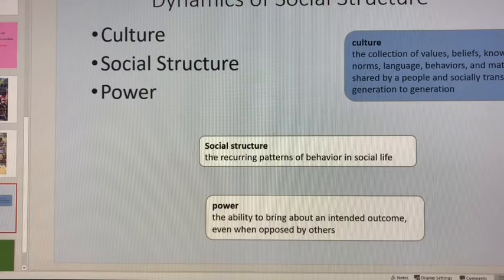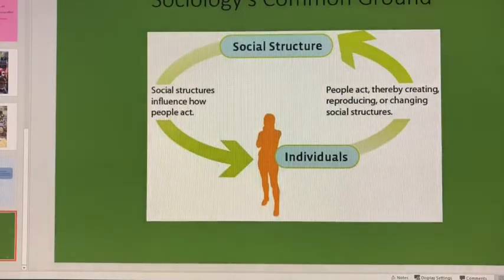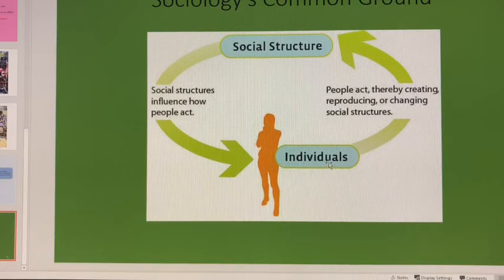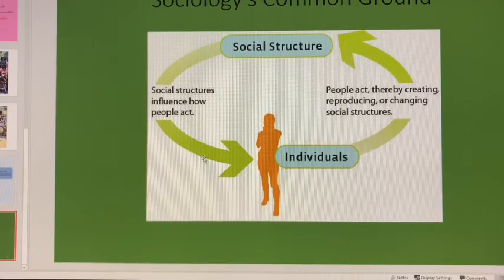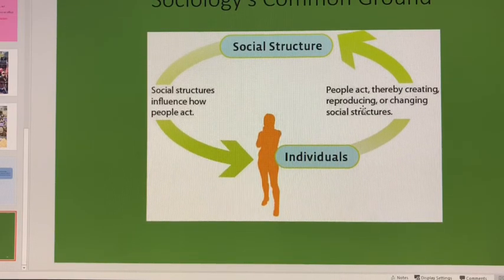All of that is part of social structure and it completely affects you. You are part of a society, you live in a society, but social structure completely defines that society. As you can see how the circle connects — social structure influences how people act, and we are part of society. It influences us. And when we act, we create and produce — or we can change — social structure. It's all very much connected.